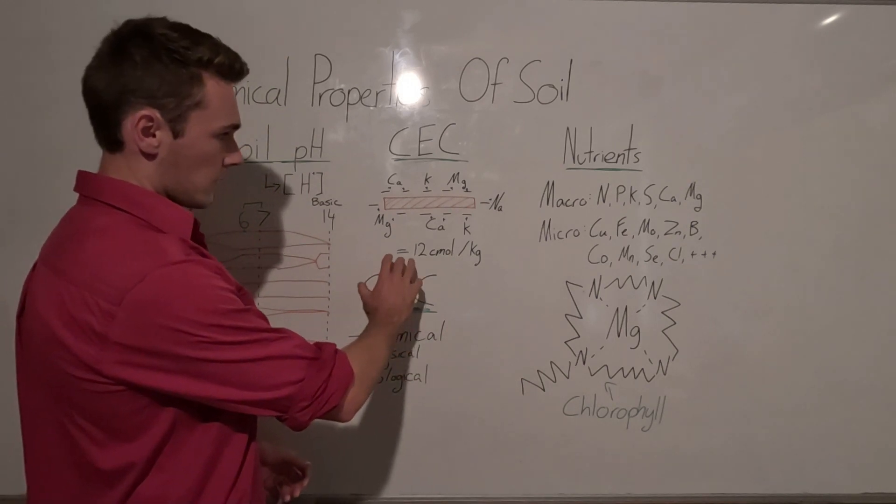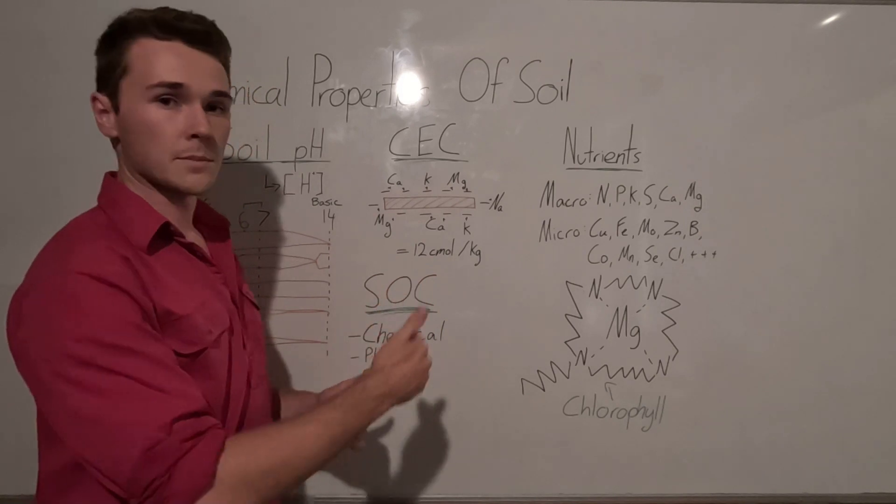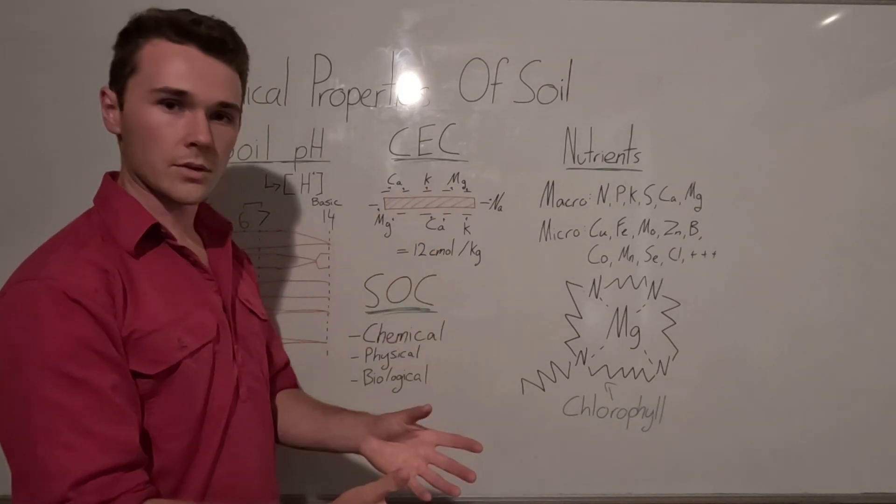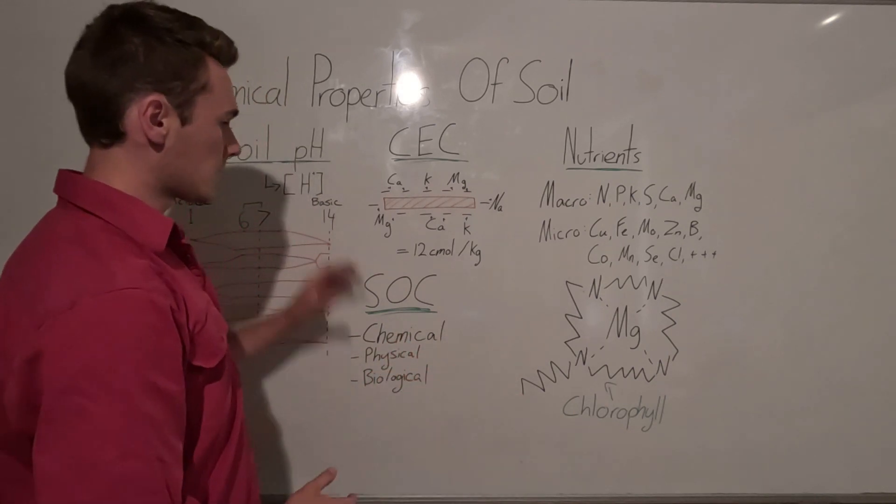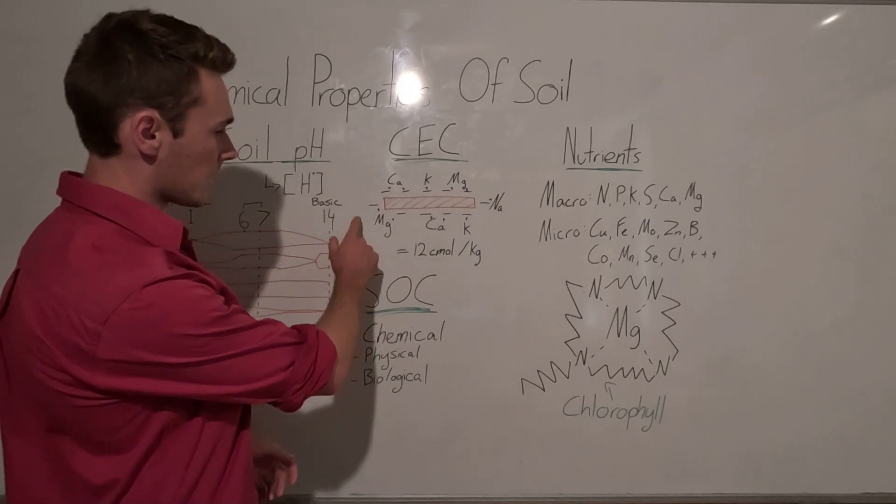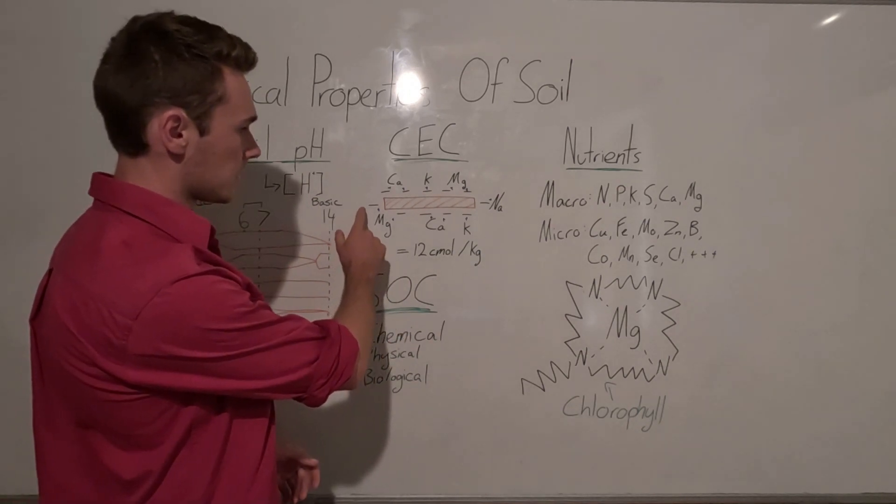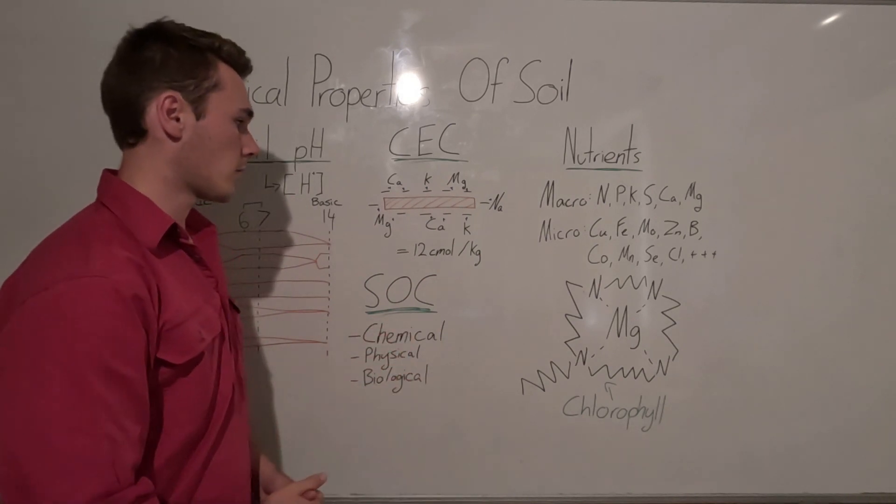So we express our cation exchange capacity as centimoles per kilo. So it's per kilo of soil, how many positive things can we stick in that. And so for this one here for example, it's 12 centimoles per kilo, which means there's basically 12 centimoles of cations that can stick to 1 kilo of soil.